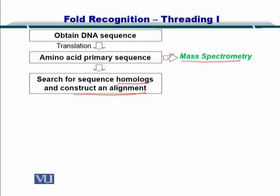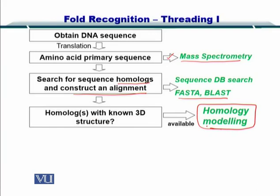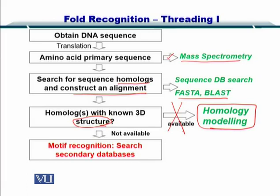Now, what if homology is low between the sequence that you are trying to find the structure for and the sequences in the database? That is the question we are going to address in this module. You get sequences from the database and perform a BLAST. If homologues with a known 3D structure were not available, you would not be able to do homology modeling. This is the precise condition in which we go for fold recognition or threading.